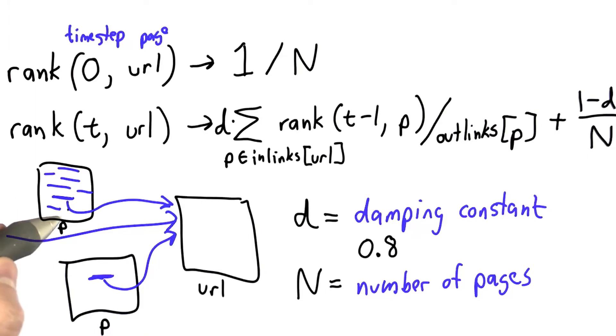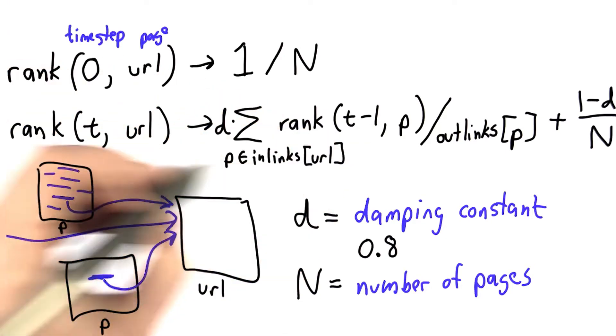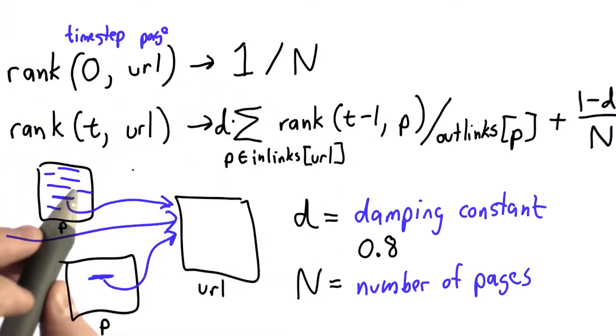Our goal is to write code that computes the formula we worked out earlier to compute the rank for each page. Instead of using a recursive definition, we're going to write a loop that goes through time steps, and we're going to figure out how many time steps we want.